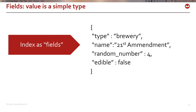Then you describe how you want the fields in your brewery mapped. A field is a name-value pair in JSON where the value is a simple type — a string, boolean, or number. So name, random number, and edible, in this example, are all mapped as fields.